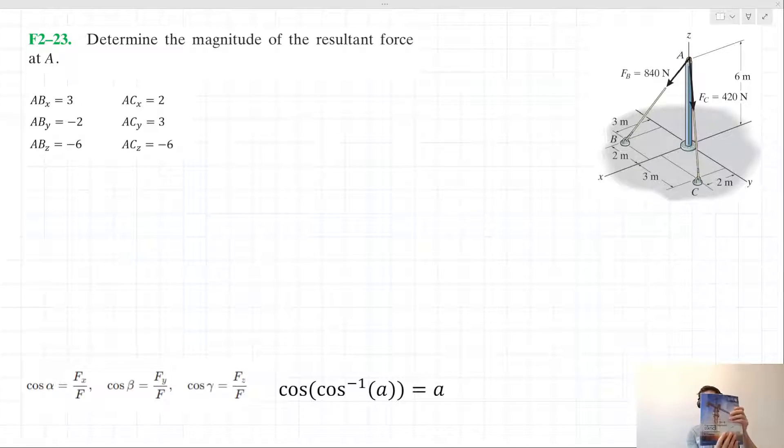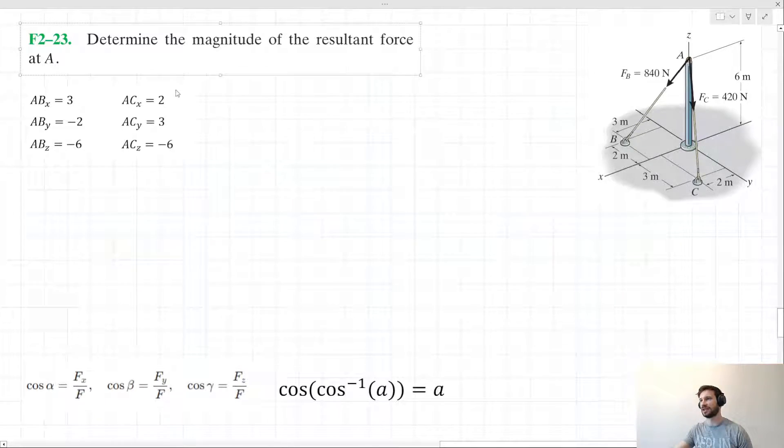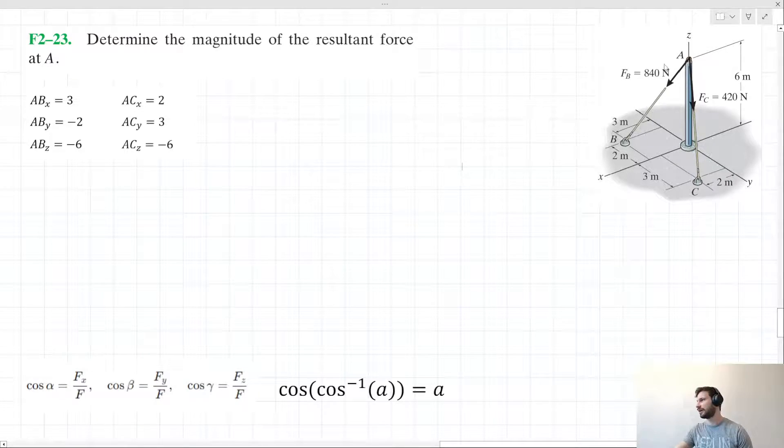Hello and welcome to this video tutorial for R.C. Hibbler's Engineering Mechanics Statics textbook. We have this problem from chapter 2, which asks to determine the magnitude of the resultant force at A. A is this point here in the diagram, and we have two forces acting about point A: FB and FC.